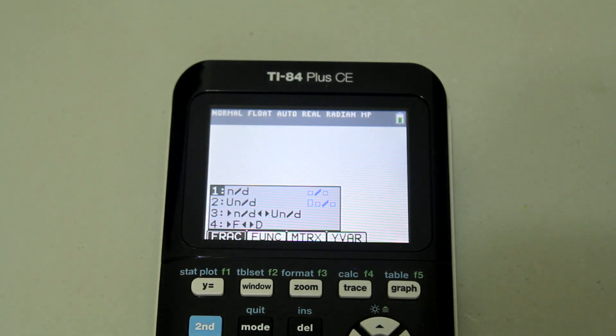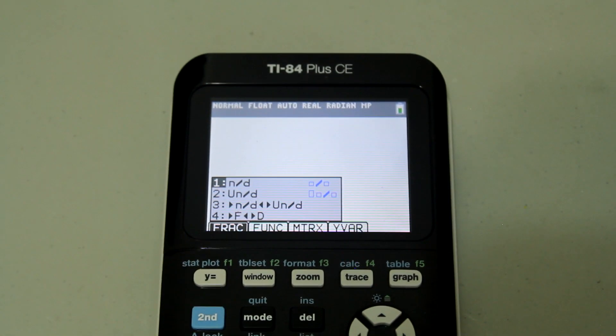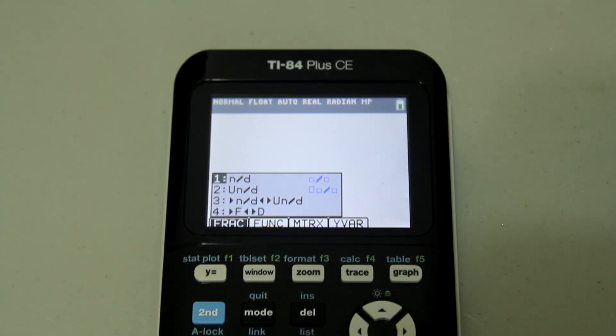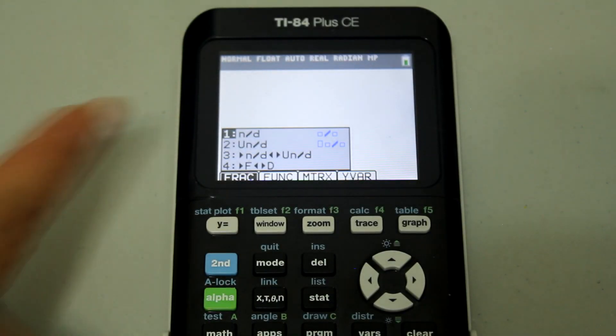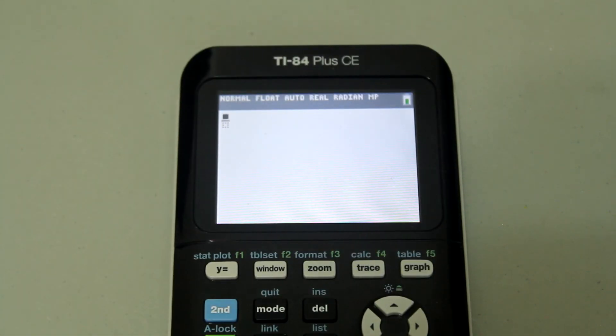So let's do a few examples. Let's add three fourths and six sevenths. Select the fraction option.